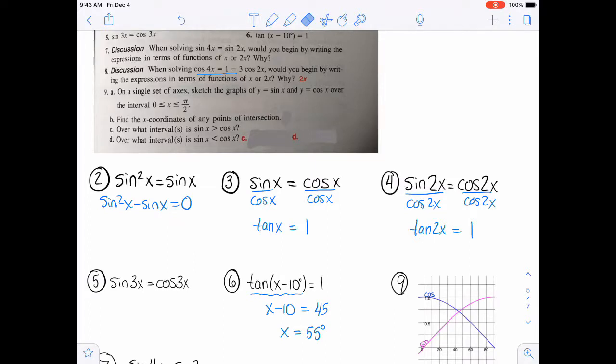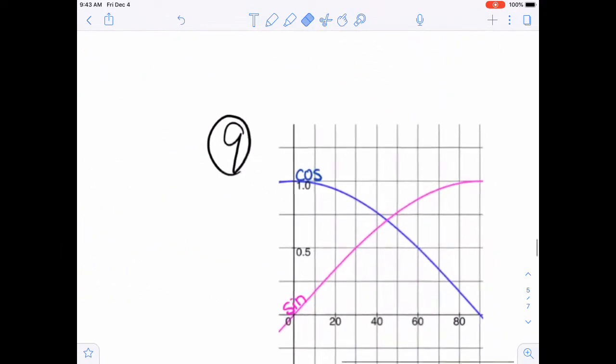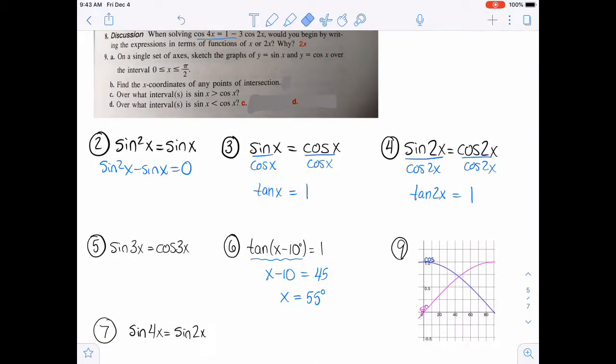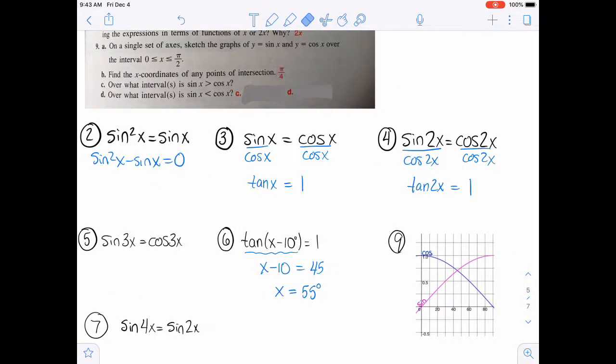So for number 9, it says on a single set of axes, sketch the graphs of y equals sine x and y equals cosine x over the interval 0 to pi over 2. So basically the first quadrant, I happened to have my calculator in degree mode when I did this, so it goes from 0 to 90. So that's this little graph down here. And then it says find the x-coordinates of any points of intersection. Part of the reason I did it in degree mode is because that way you can see that that intersection is going to be at 45 degrees. So 45 degrees is pi over 4.